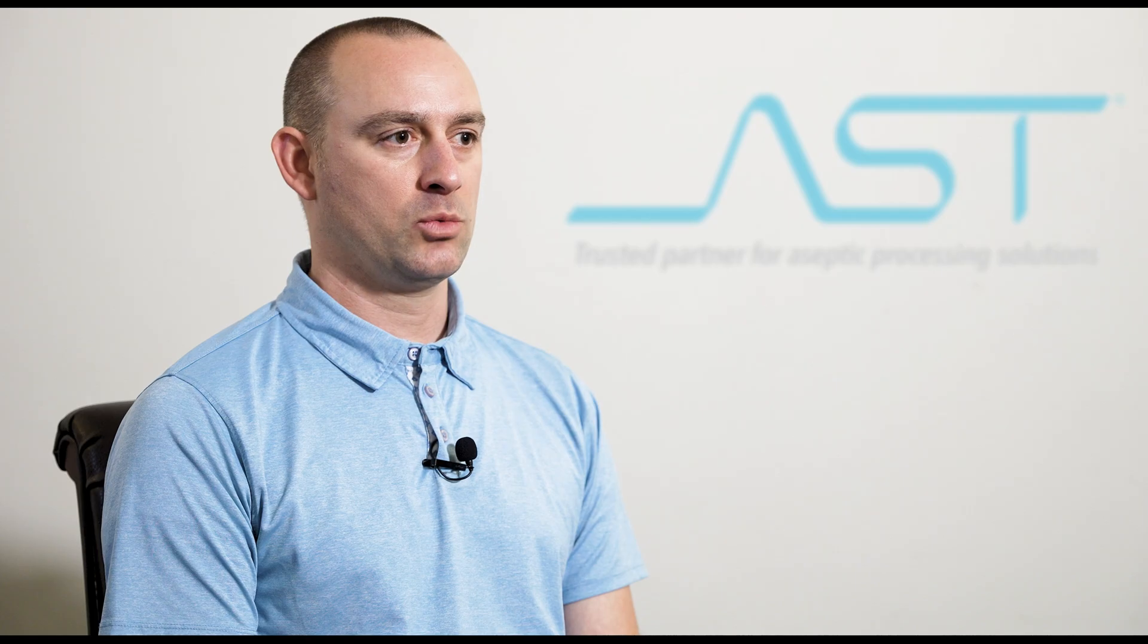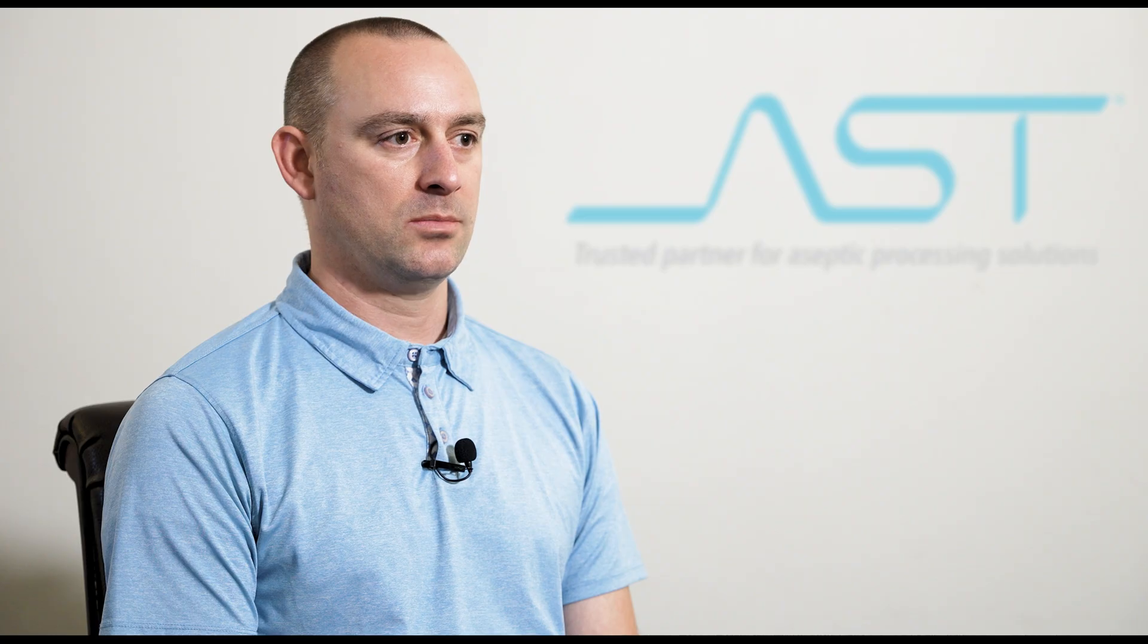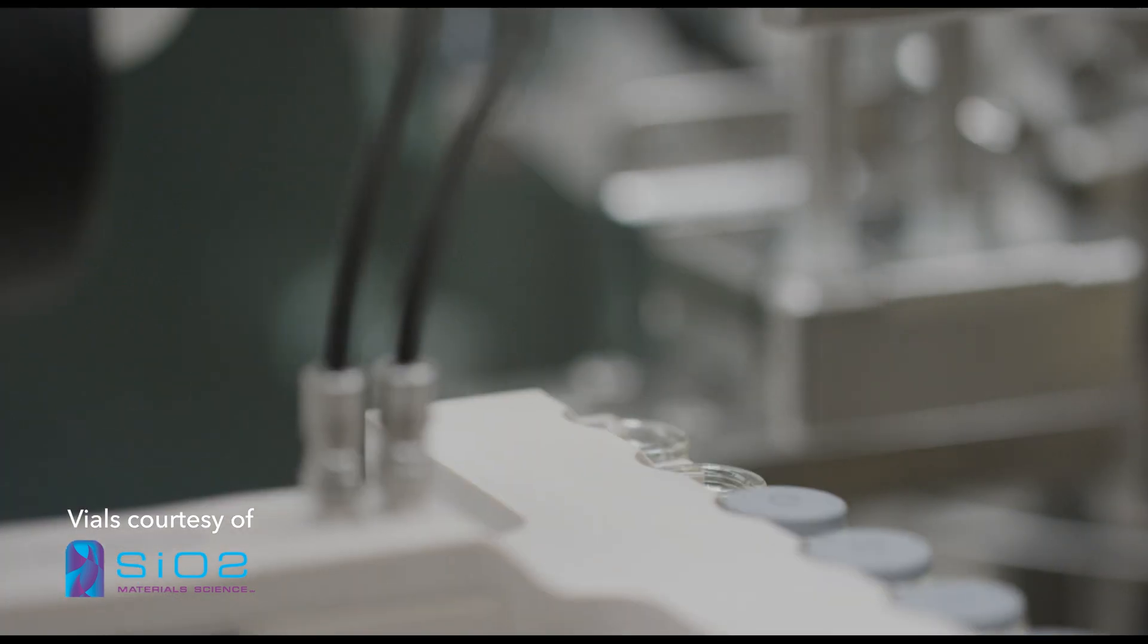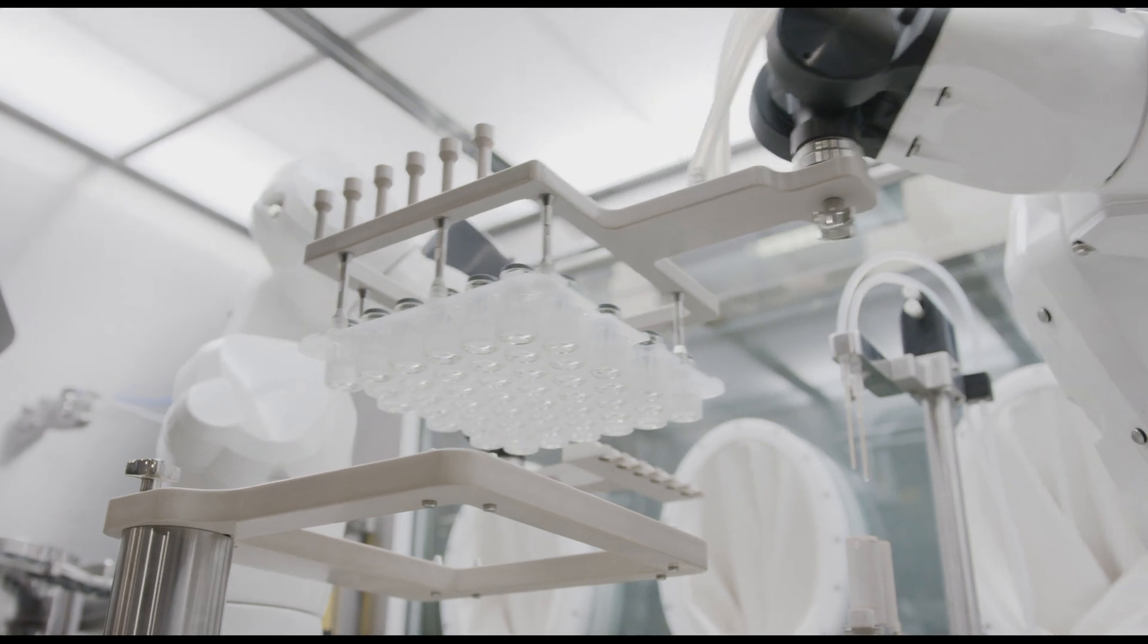They needed to have a suitable reach and weight capacity, as well as the ability to work at high speed. The Staubli robots maintain a clean environment while allowing for fast and consistent processes. Many times they allow us to save space in the machines.